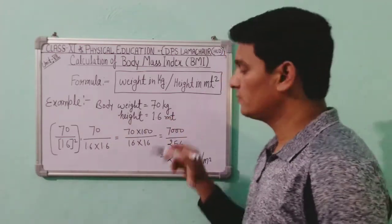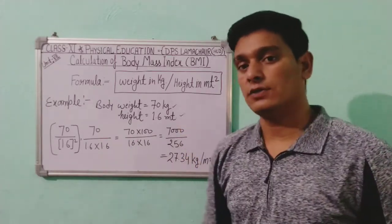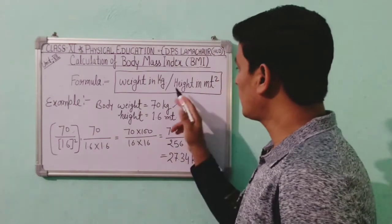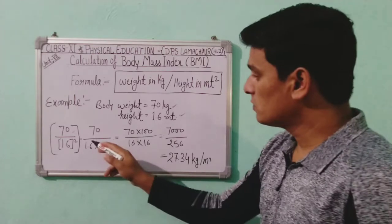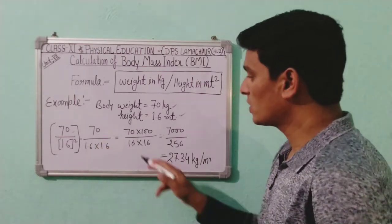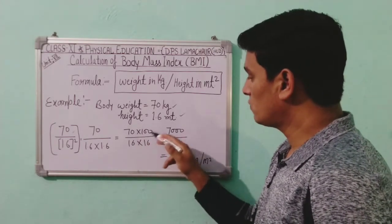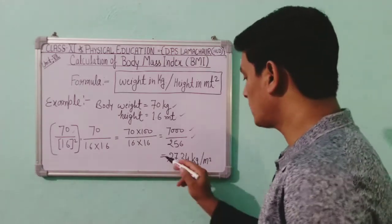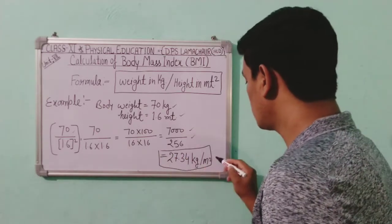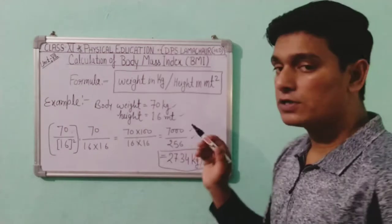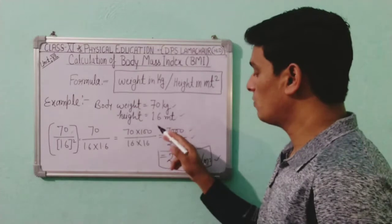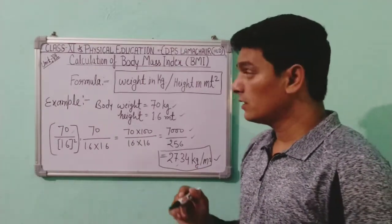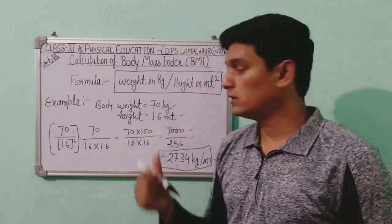Let's take an example. Body weight is 70 kg and height is 1.6 meters. Putting this data into the formula: BMI = 70 divided by 1.6 squared, which equals 70 divided by 1.6 × 1.6. This can be solved as 7000 divided by 256, which gives 27.34 kg/m². So the BMI of a person whose weight is 70 kg and height is 1.6 meters is 27.34.